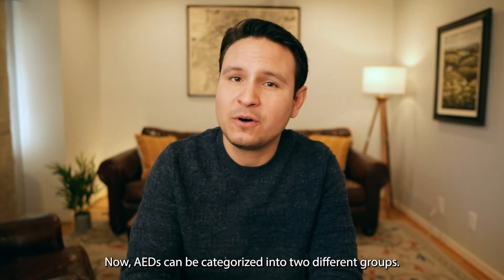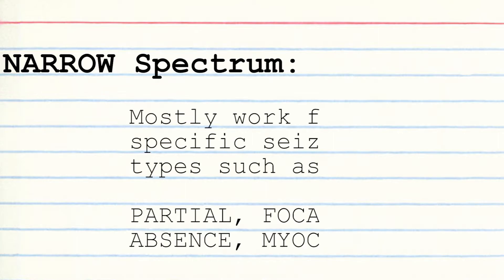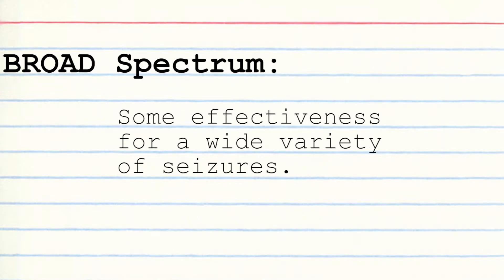AEDs can be categorized into two different groups: narrow-spectrum and broad-spectrum. Narrow-spectrum AEDs mostly work for specific seizure types such as partial, focal, absence, or myoclonic seizures. Broad-spectrum AEDs have some effectiveness for a wide variety of seizures.